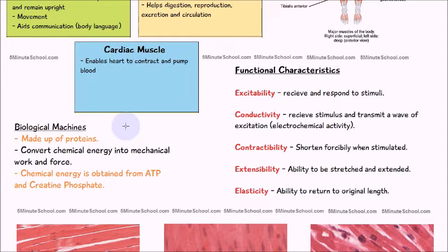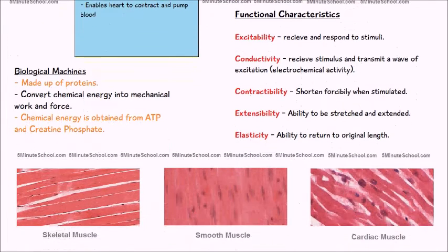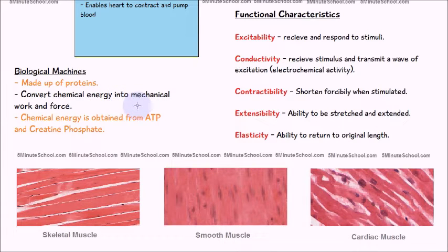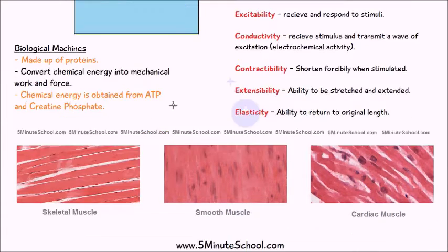The contraction of cardiac muscle is what enables the heart to pump blood. Muscles are generally considered to be biological machines because they're made up of proteins, and their function is to convert chemical energy into mechanical work and force. This chemical energy is obtained from ATP and creatine phosphate.